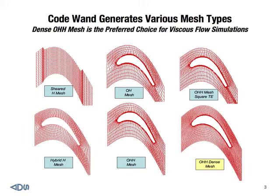The shear H mesh is not the preferred mesh for today's modern turbomachinery applications. The lower left is what we call the hyper H mesh, which tries to resolve the issue of mesh distribution. As you can see in the shear H mesh, there are two bands of very dense mesh very close to each other, creating a zone where the flow field is difficult to resolve. People addressed this by writing a Poisson solver to relax the mesh in those regions.